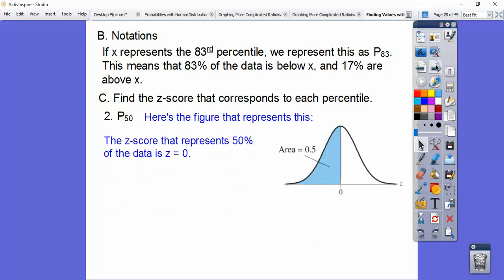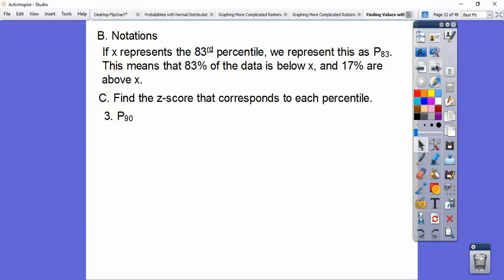P sub 50. So that would be that area right there. So a z-score that represents 50% of the data is z equals 0 because 50% is below and 50% is above.